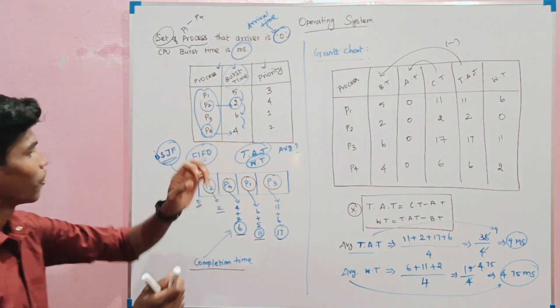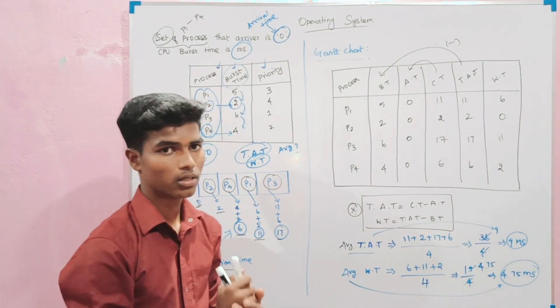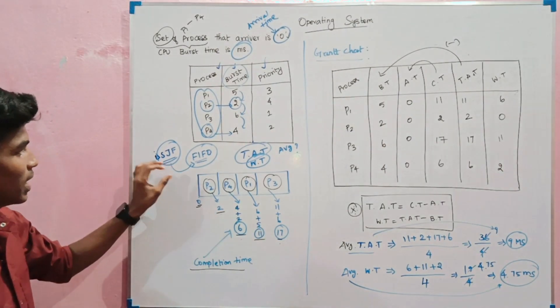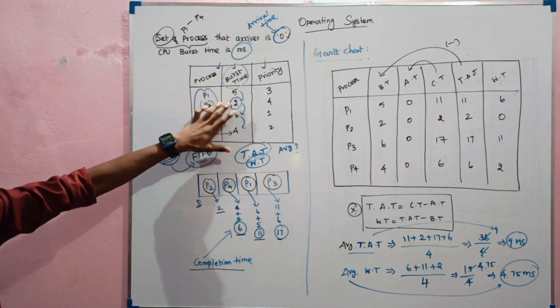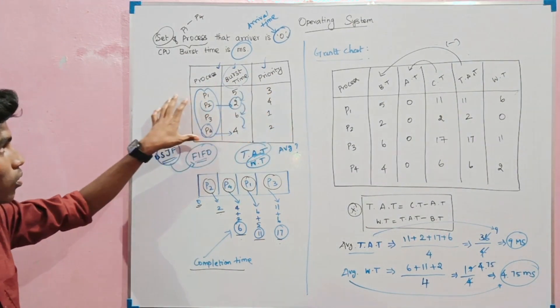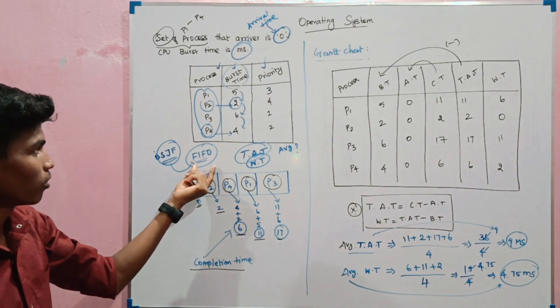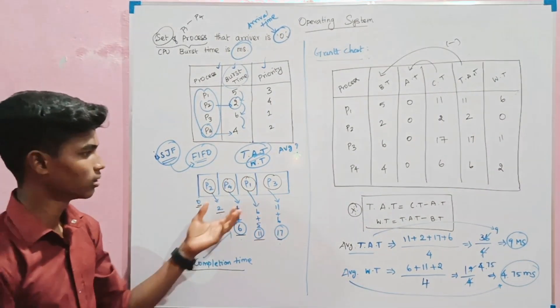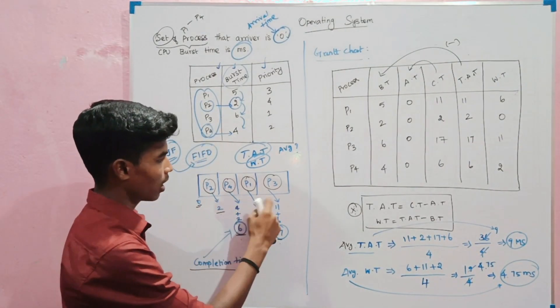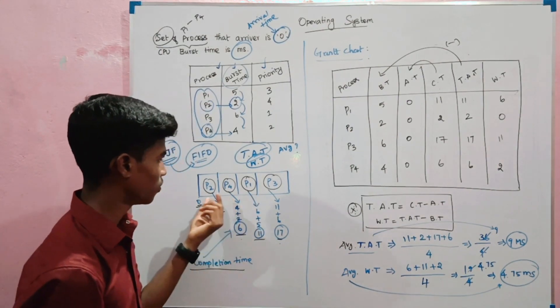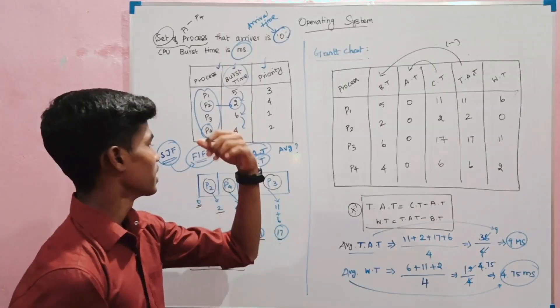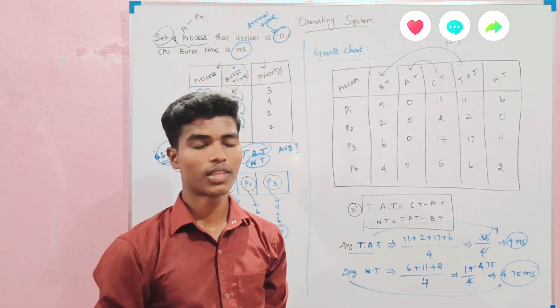So, how to find SJF — Shortest Job First algorithm. We find the answer by identifying the process order: P1, P2, P3, P4, then find the completion times, turnaround times, waiting times, and finally the averages. That's how to find SJF. If you like this video, please share and comment. Thank you for watching.